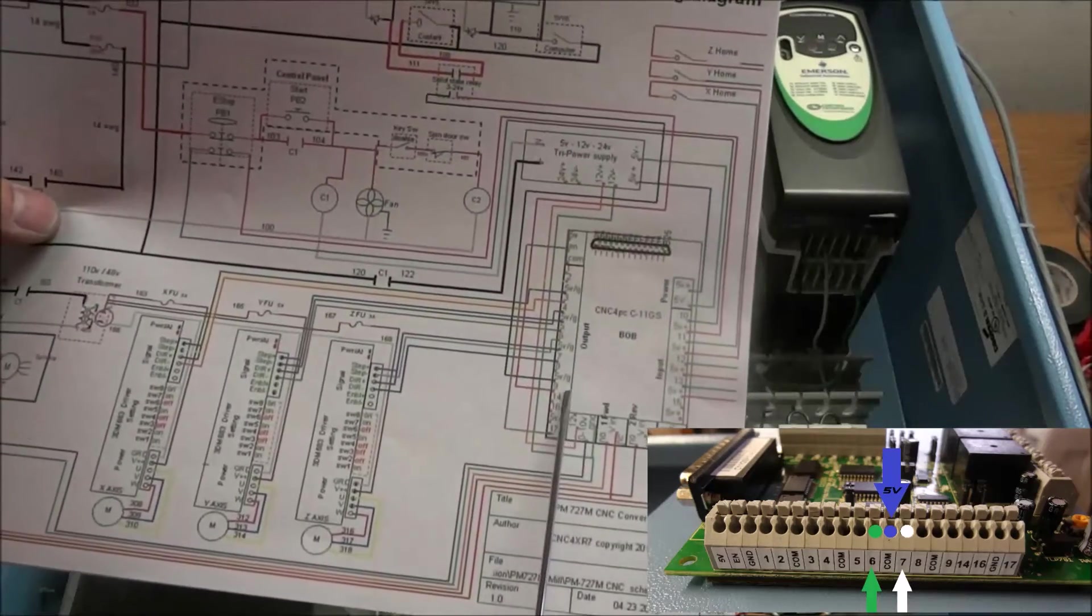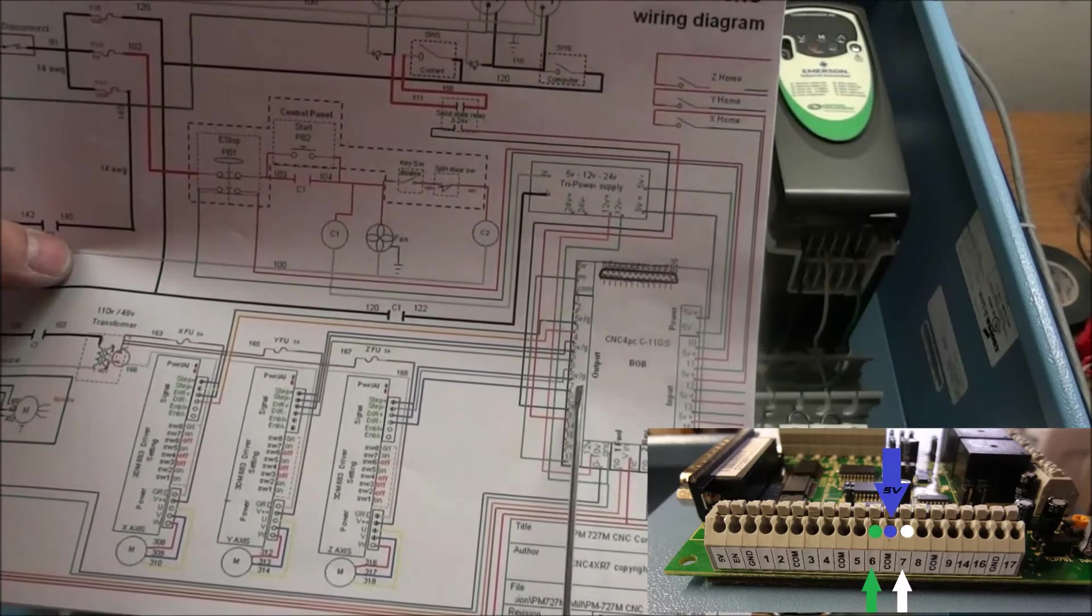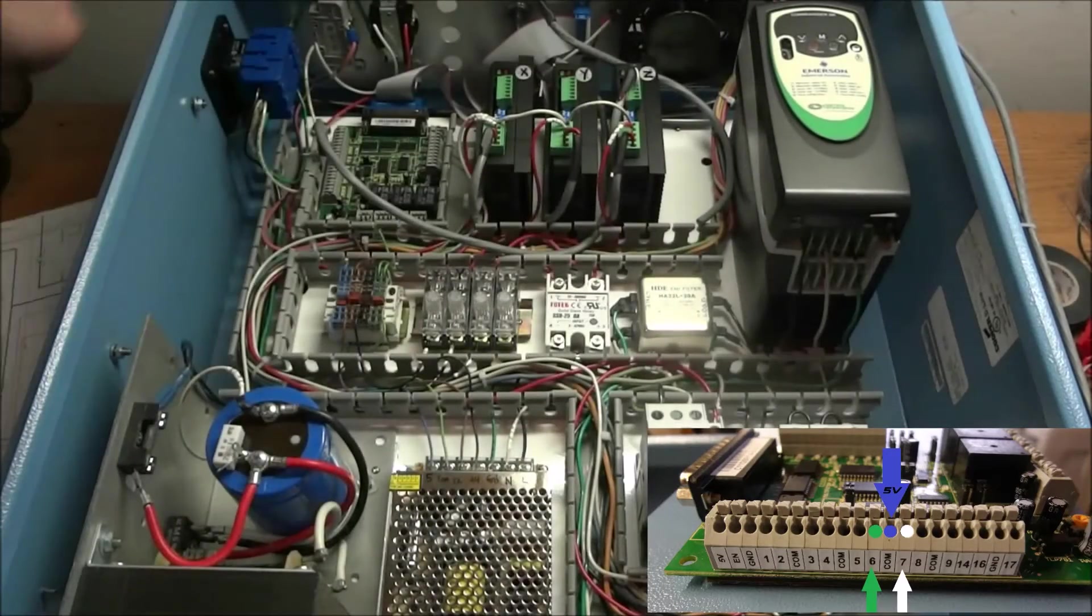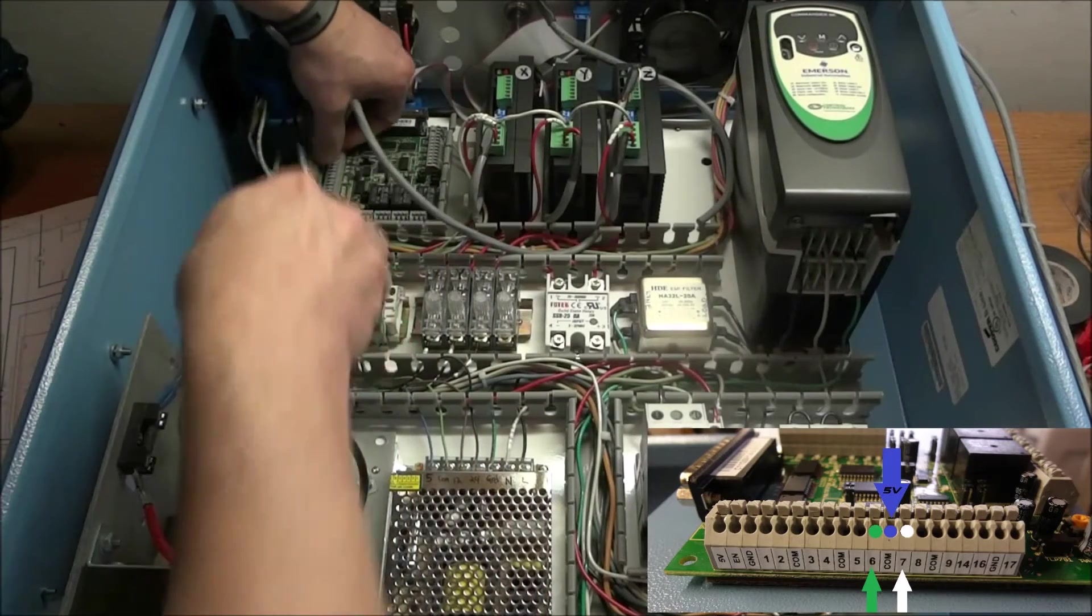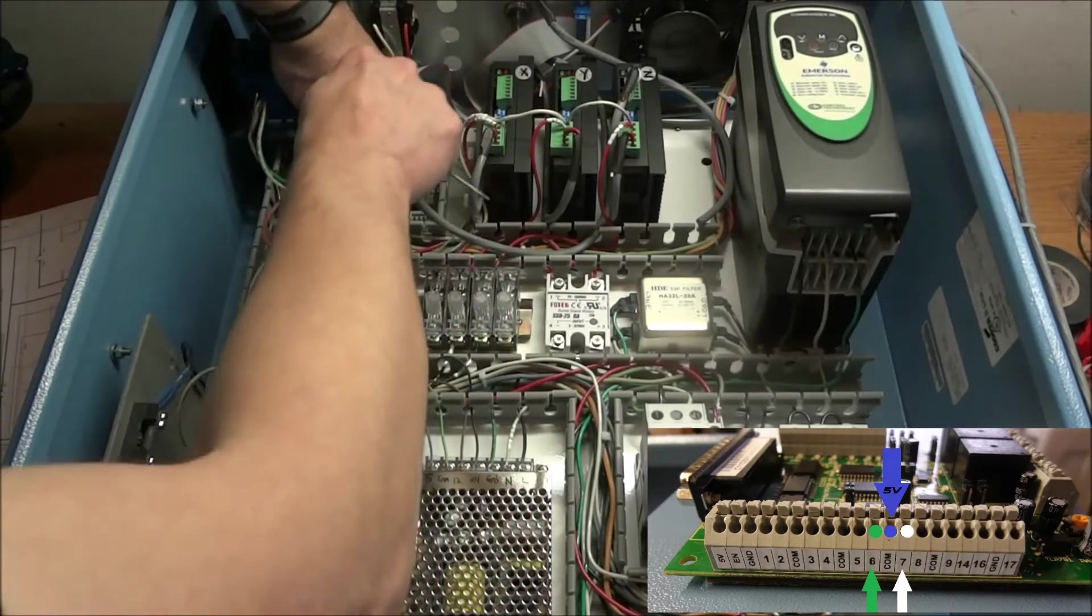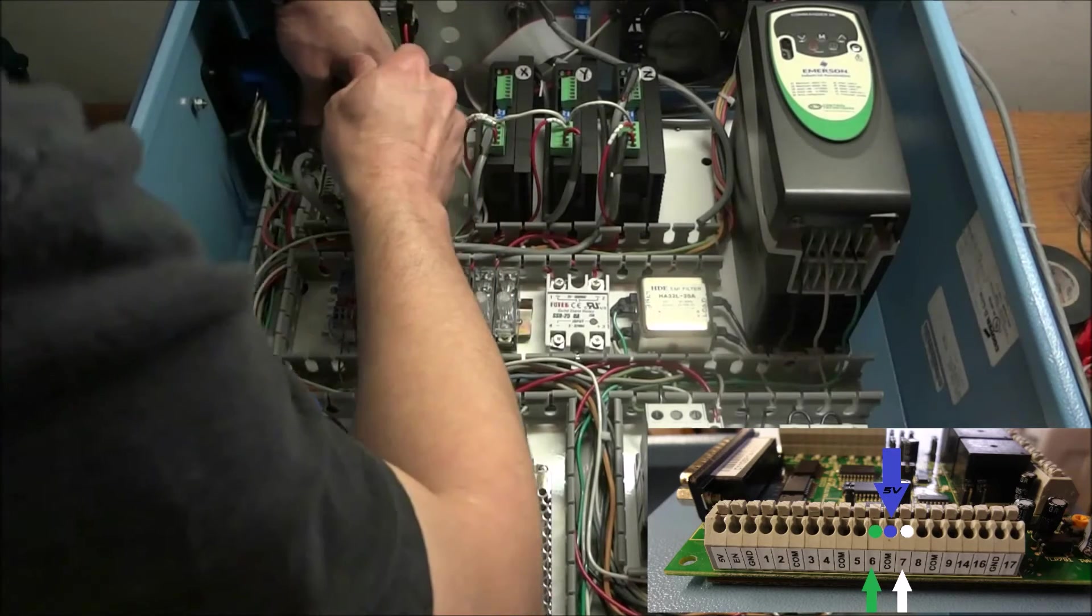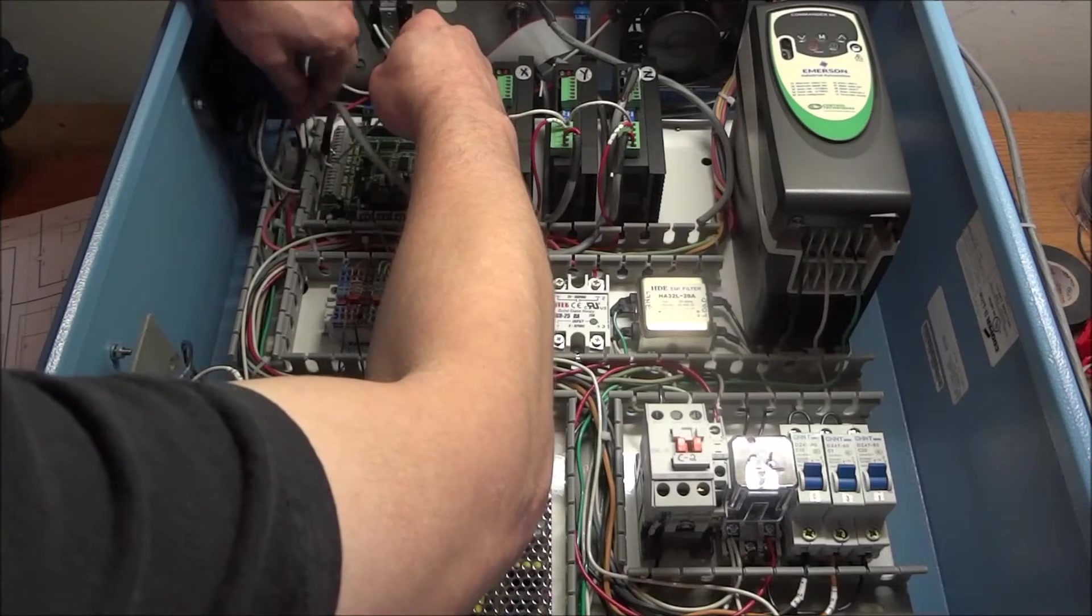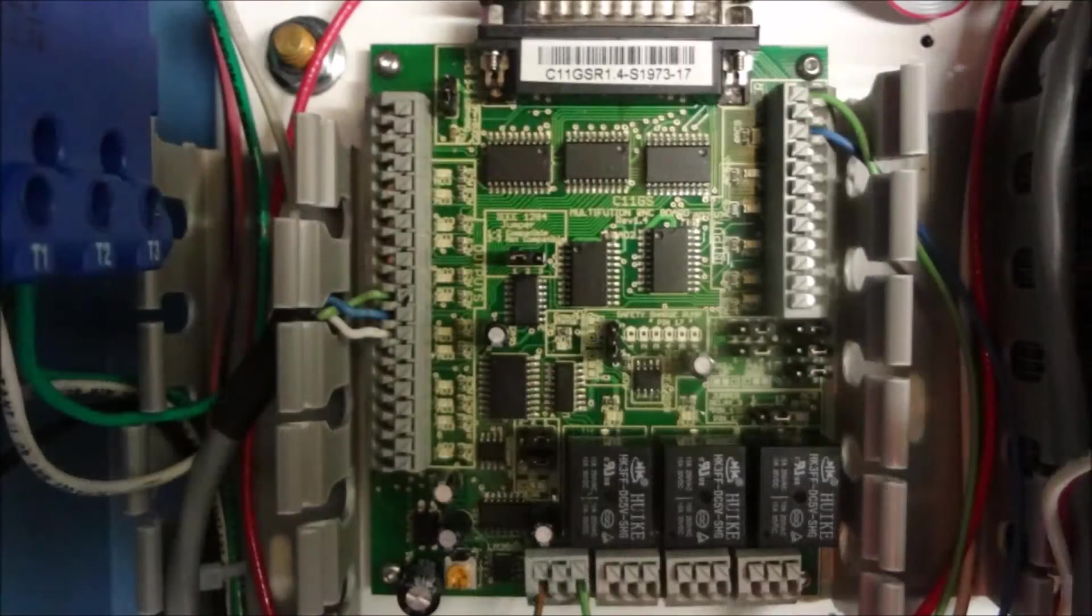And then our next wire is wire 7. And 7 is going to go to our direction negative, which is the white wire. This right up under there. And then right above the blue wire is our pulse negative. And we're going to stick that into there also. Okay. We can see we have our wires connected.